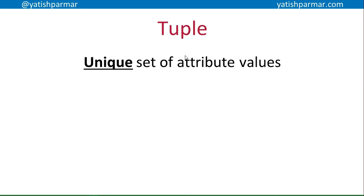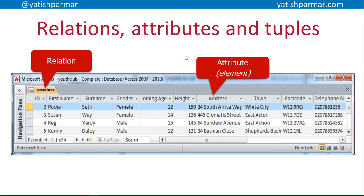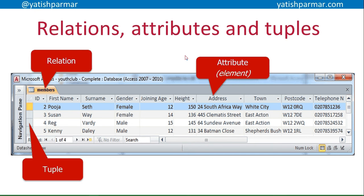So a tuple is a unique set of attribute values. Looking at the same screenshot again: a relation is the table, the attributes are the items of data that make up the table, and a tuple — being a unique combination of attributes — is a row within the table. So a tuple is a row in a table in a relational database. You should be able to relate the terms relation, attribute, and tuple to table, fields, and records.